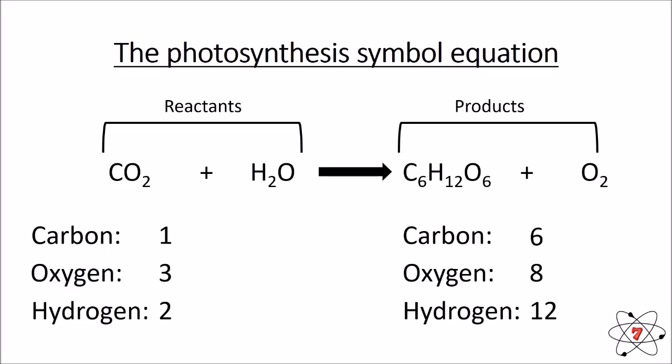I have one carbon on the reactant side and six on the product side — one fits into six, six times. For hydrogen, I have two on the reactant side and twelve on the product side — two fits into twelve six times. Three oxygens on the reactant side does not fit evenly into eight, so I'll ignore oxygen for now. I'll balance hydrogen first as it's the easiest element.